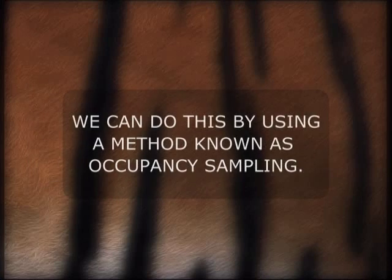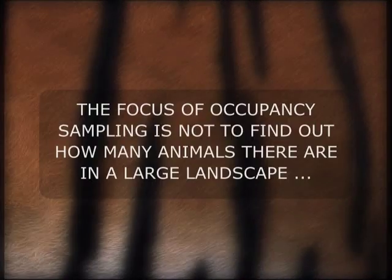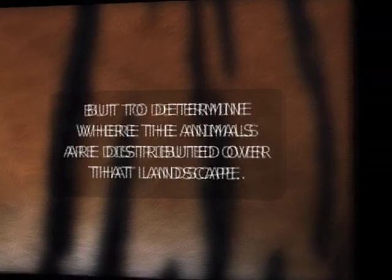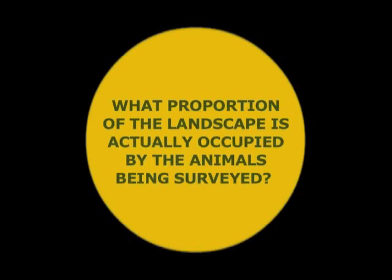We can do this by using a method known as occupancy sampling. The focus of occupancy sampling is not to find out how many animals there are in a large landscape, but to determine where the animals are distributed over that landscape. The main objective in an occupancy survey is to find out what proportion of the landscape is actually occupied by the animals being surveyed.